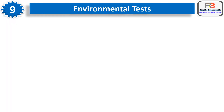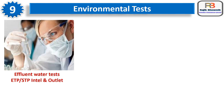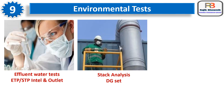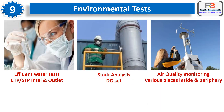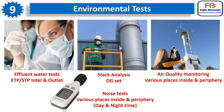Number nine is Environmental Tests. These include: effluent water tests at ETP/STP inlet and outlet, stack analysis of DG set, air quality monitoring of various places inside the premises and periphery, and noise tests of various places inside the premises and periphery at daytime and nighttime. As per Pollution Control Board norms, all these tests are to be done by PCB-approved testing agencies, and all reports are to be submitted to the PCB as per required frequency.